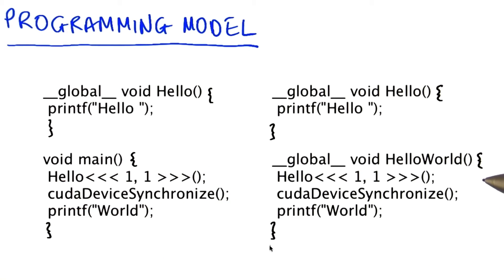Here's the equivalent code for dynamic parallelism. You can see it looks pretty much exactly the same. I've moved the code that was on the CPU directly to the GPU, and the same rules apply. I'm calling Hello to be printed from another kernel, I'm synchronizing so that the output completes, and then I'm printing World from the GPU kernel.